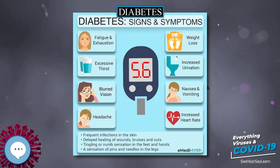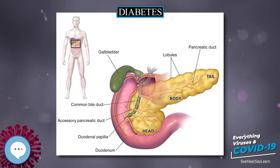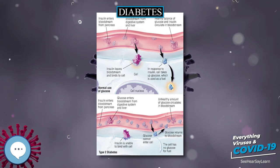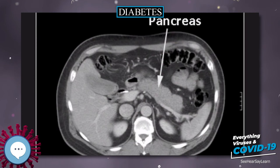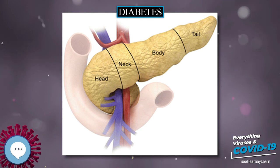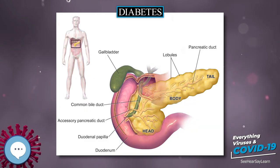Diabetes occurs throughout the world but is more common, especially type 2, in more developed countries. The greatest increase in rates has however been seen in low- and middle-income countries, where more than 80 percent of diabetic deaths occur. The fastest prevalence increase is expected to occur in Asia and Africa, where most people with diabetes will probably live in 2030. The increase in rates in developing countries follows the trend of urbanization and lifestyle changes, including increasingly sedentary lifestyles, less physically demanding work, and the global nutrition transition, marked by increased intake of foods that are high-energy-dense but nutrient-poor, often high in sugar and saturated fats, sometimes referred to as the Western-style diet. The global number of diabetes cases might increase by 48 percent between 2017 and 2045.